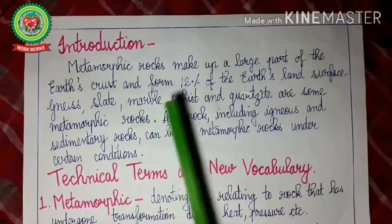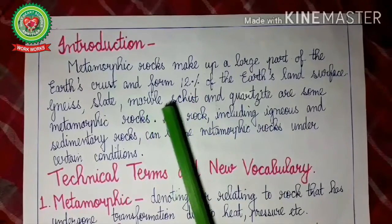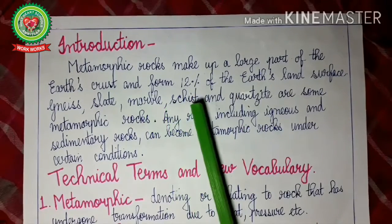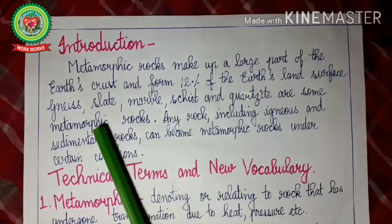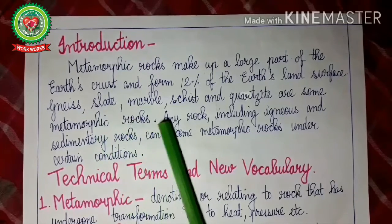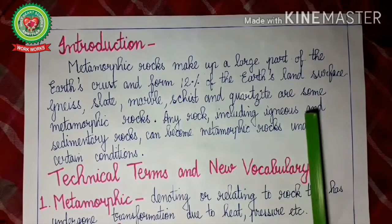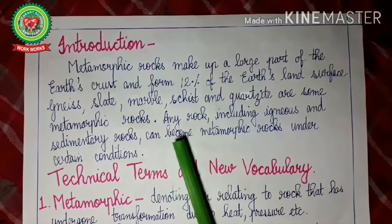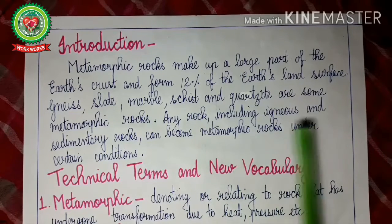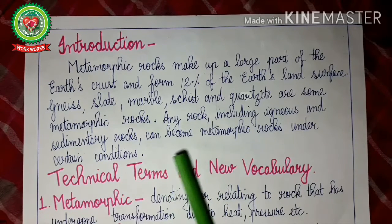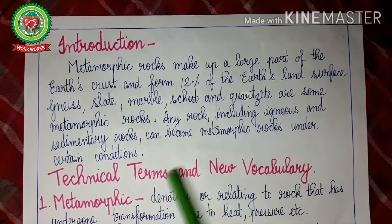Metamorphic rocks make up a large part of the earth's crust and form about 12% of the earth's land surface. Gneiss, slate, marble, schist and quartzite are some of the metamorphic rocks. Any rock including igneous and sedimentary rocks can become metamorphic rocks under certain conditions.